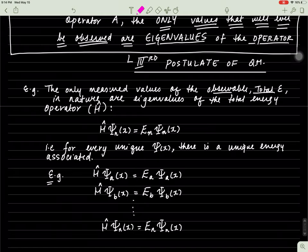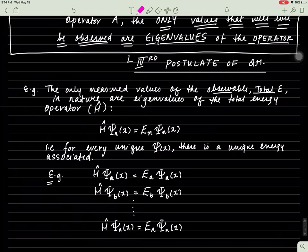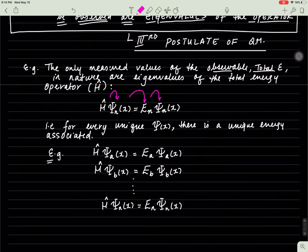The only measured values of the observable — for instance, the total energy in nature — are eigenvalues of the total energy operator, the Hamiltonian operator. When the Hamiltonian acts on some wave function that is an eigenfunction, it produces a unique energy state that's unique for that wave function, and you get the wave function back. For each unique psi of x, there's a unique energy associated. If two psi's are unique, then of course their energy states are also unique.